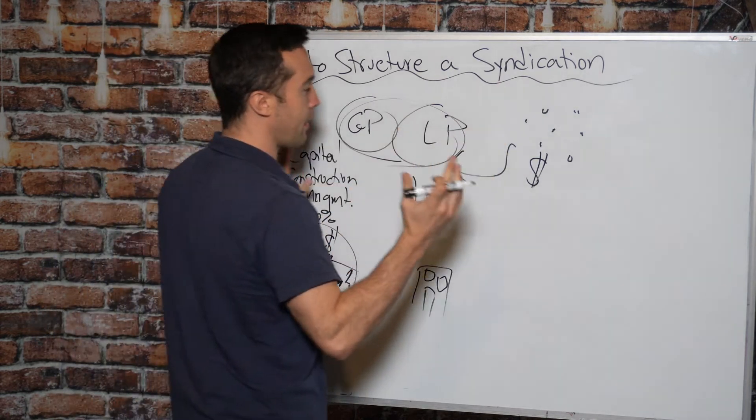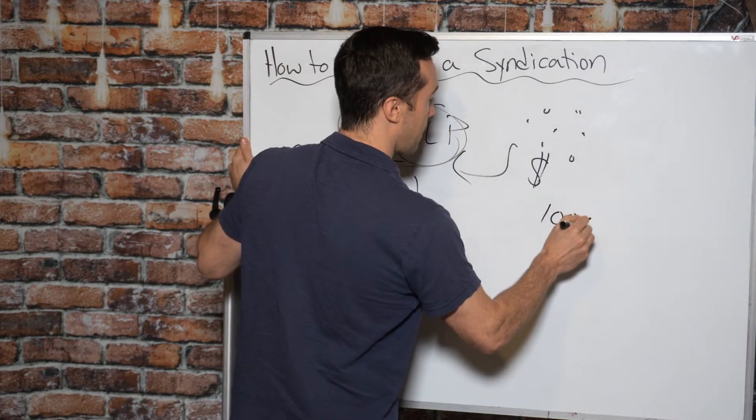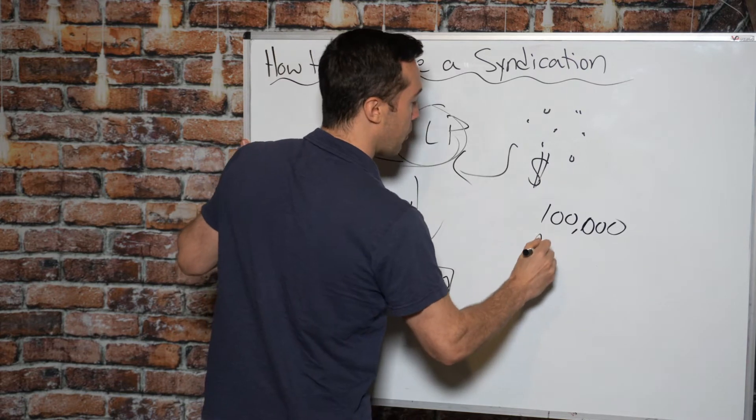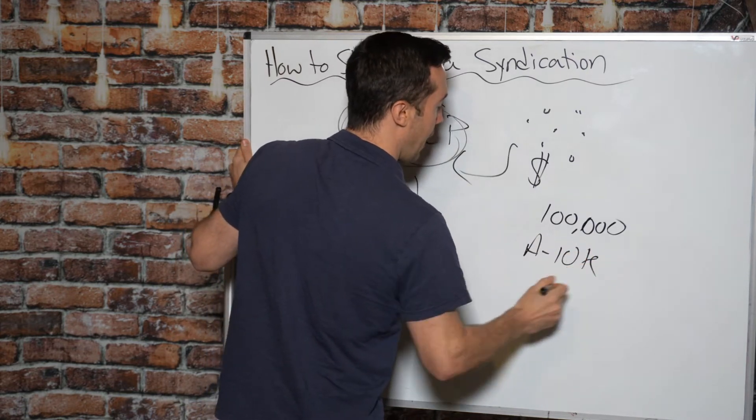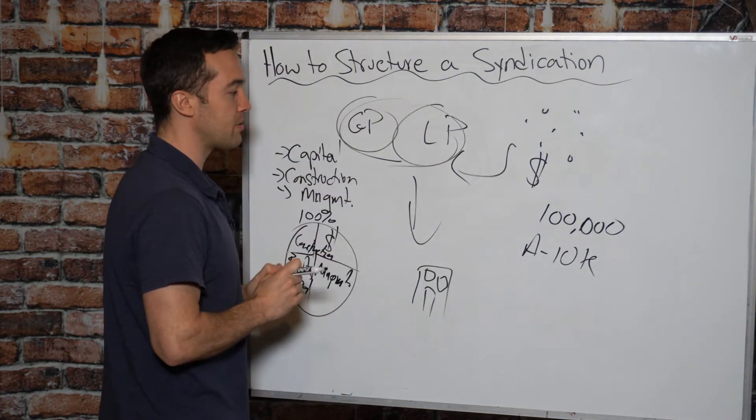Well, it's all proportionate to the amount of capital being raised. So let's say very, very easy numbers. Let's say $100,000 is being raised. Investor A brings $10,000 and everybody else brings $1,000 each.